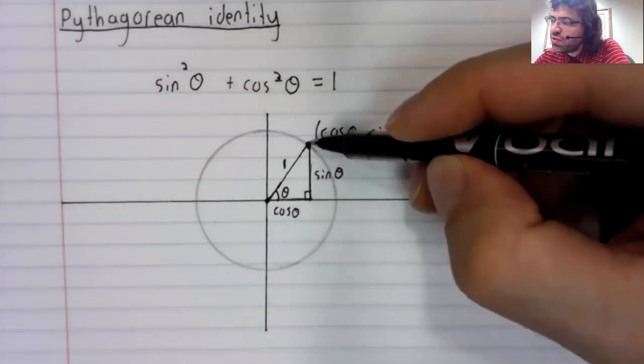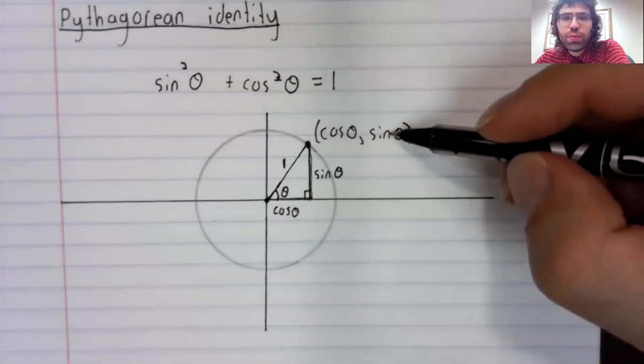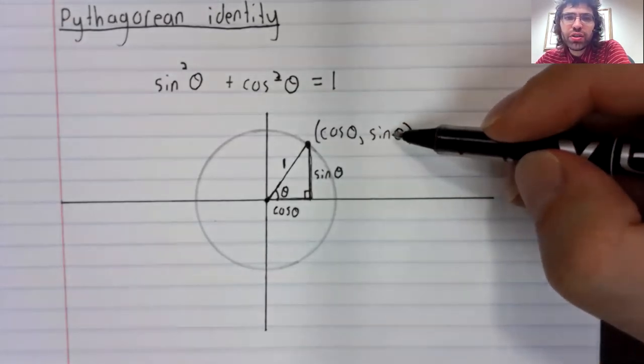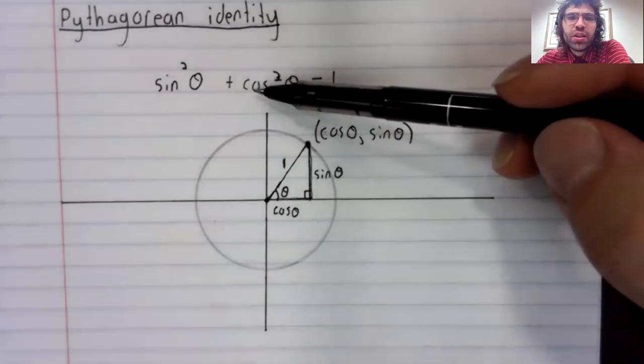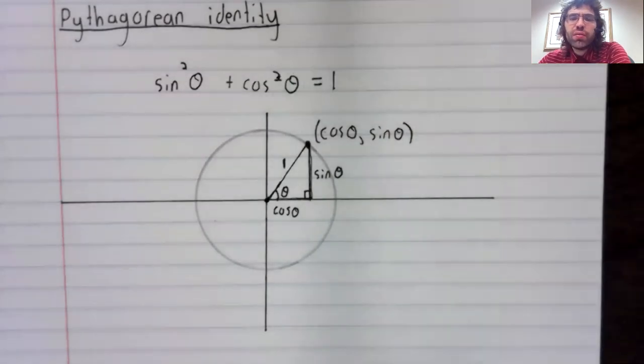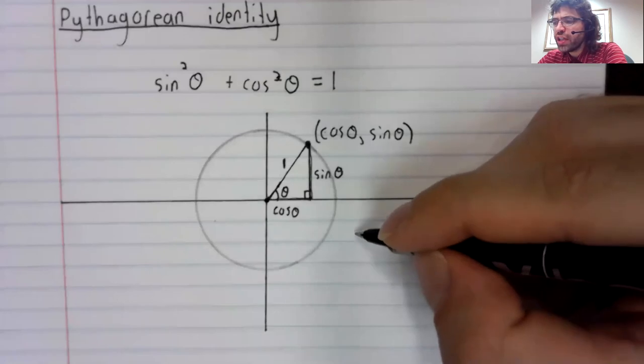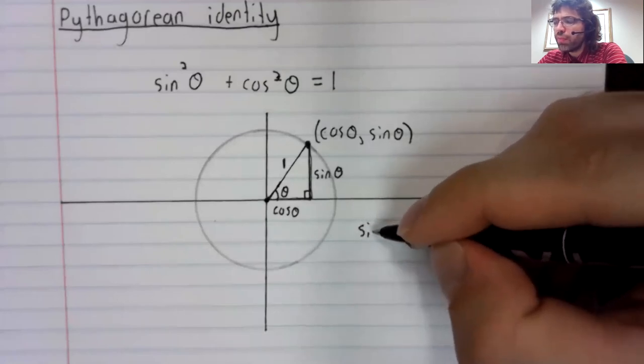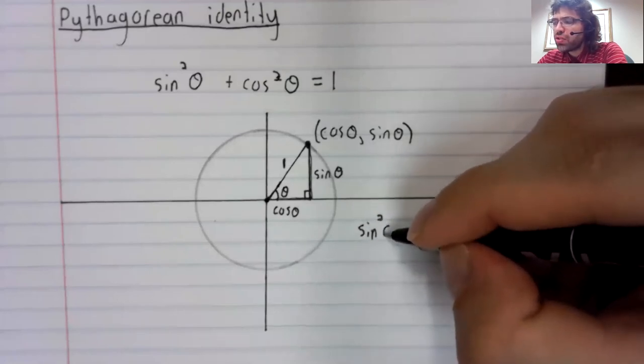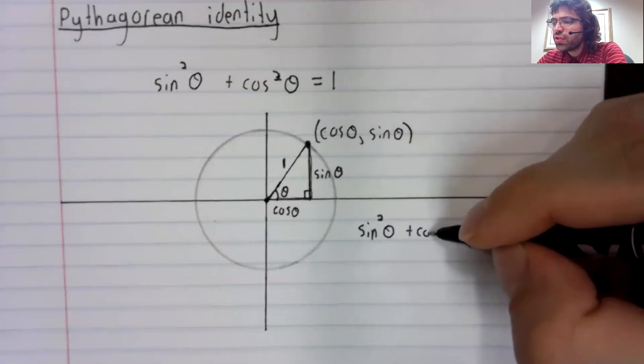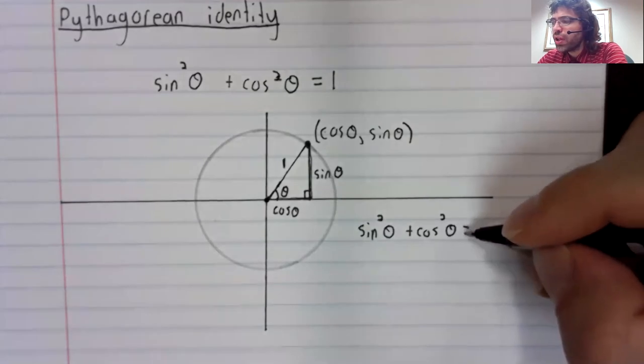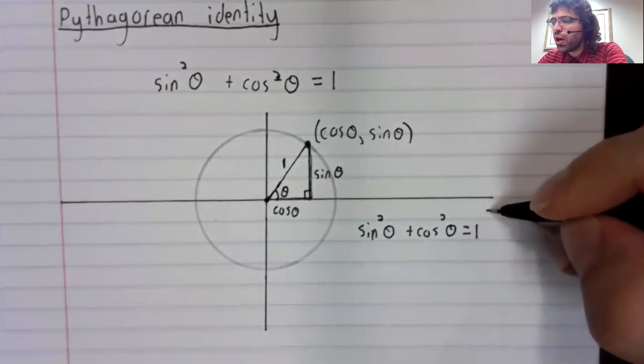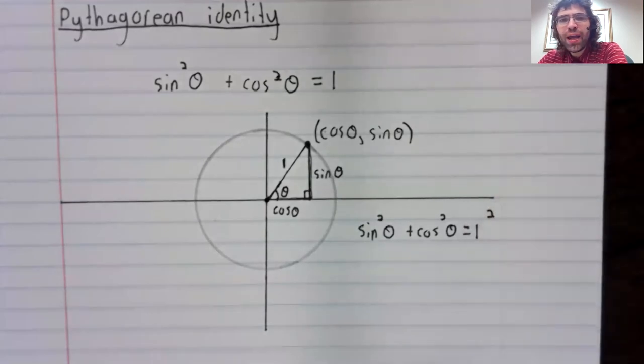And the Pythagorean identity is then just a statement of the Pythagorean theorem. One leg squared plus the other leg squared equals the hypotenuse squared.